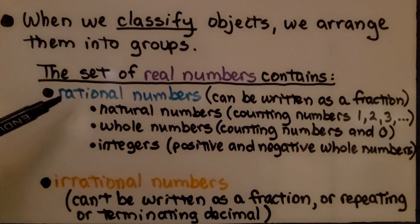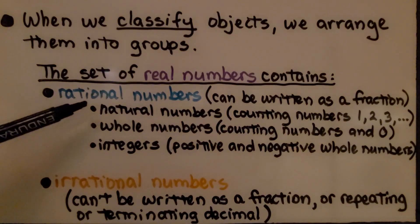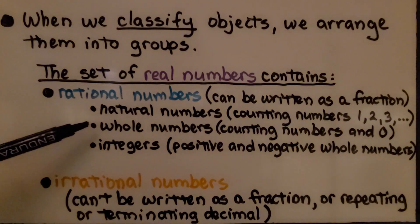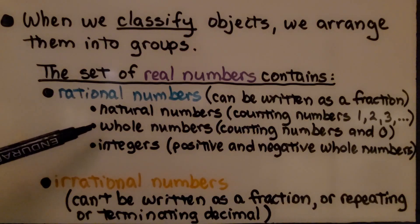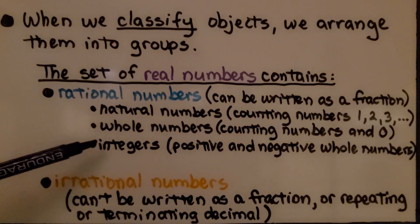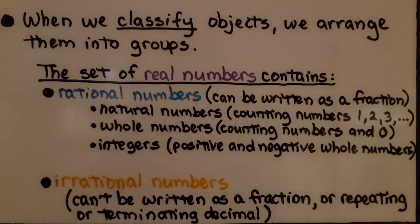The rational numbers can be written as a fraction, and they include natural numbers — those are counting numbers like one, two, three, and so on. It also includes whole numbers, that's counting numbers and the number zero, and integers, those are positive and negative whole numbers. The irrational numbers can't be written as a fraction or repeating or terminating decimal.